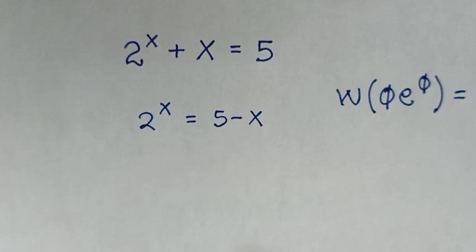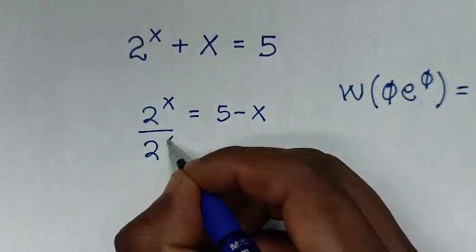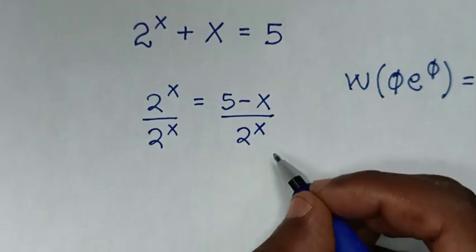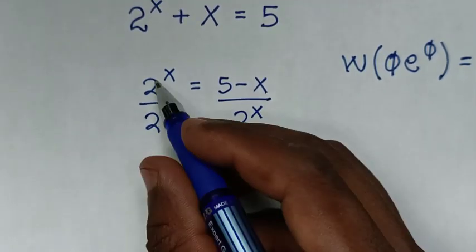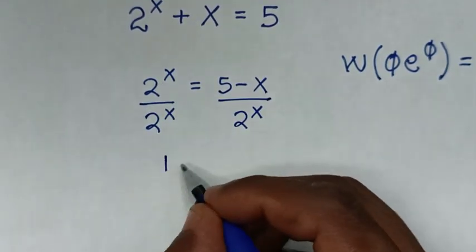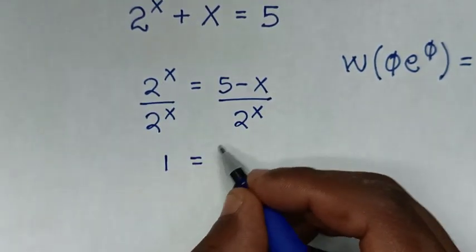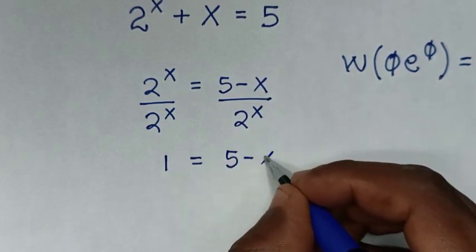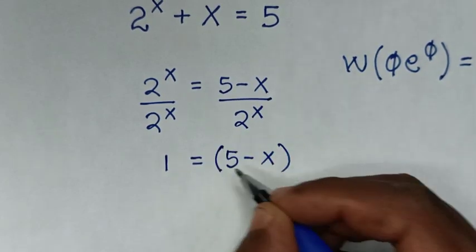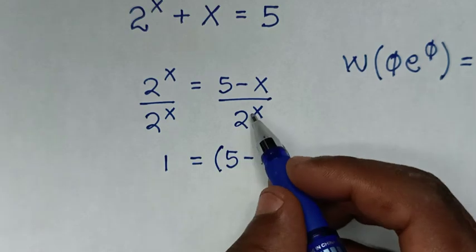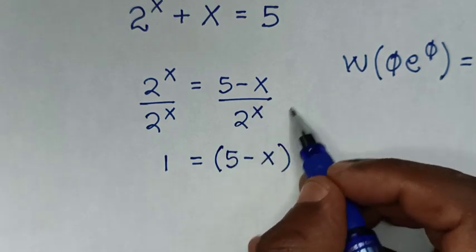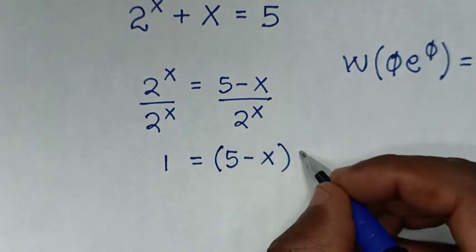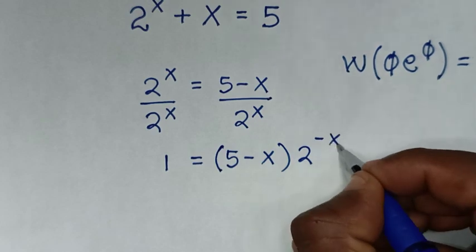In the next step we'll divide both sides by 2 to the power of x. So 2^x divided by 2^x equals 1, and on the right side we get (5 minus x) divided by 2^x, which gives us (5 minus x) times 2 to the power of negative x.